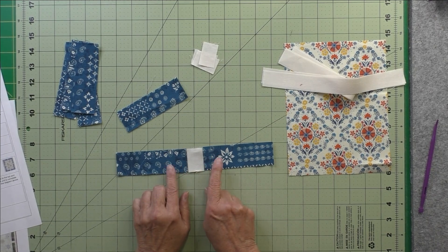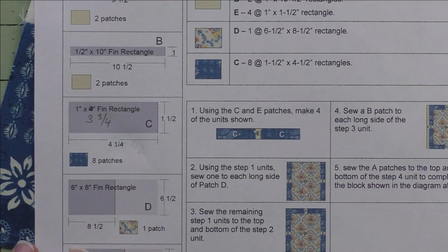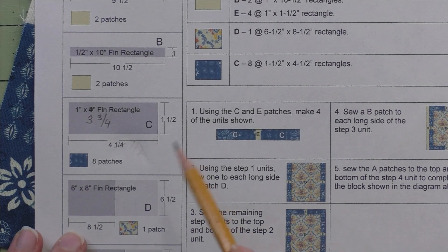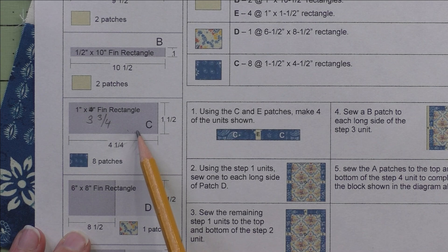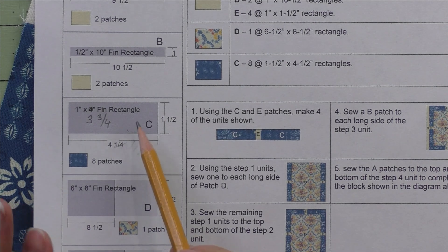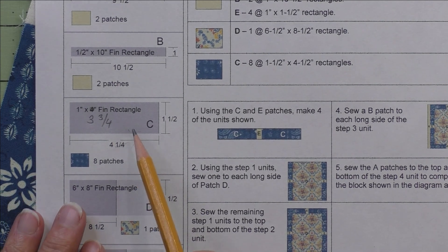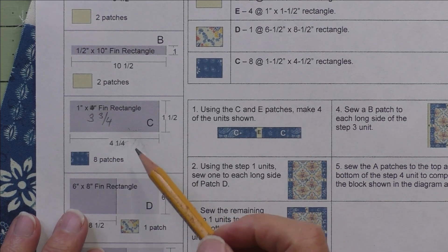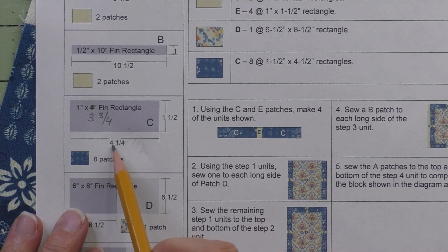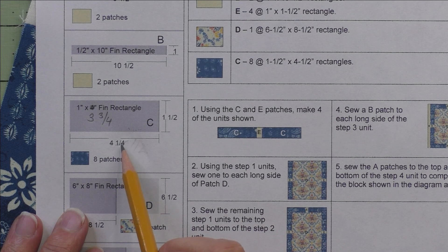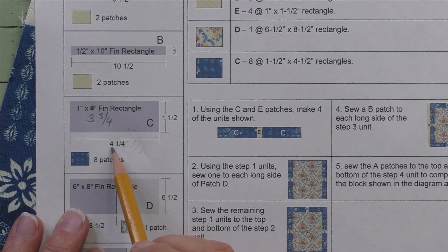I have a correction. This will be corrected on the copy that you download, so I'm just pointing it out here, but it will be correct on the download. On Patch C, I said that we cut 4.5 inches—that's incorrect. We do cut 4.25 inches this way and 1.5 inches this way.